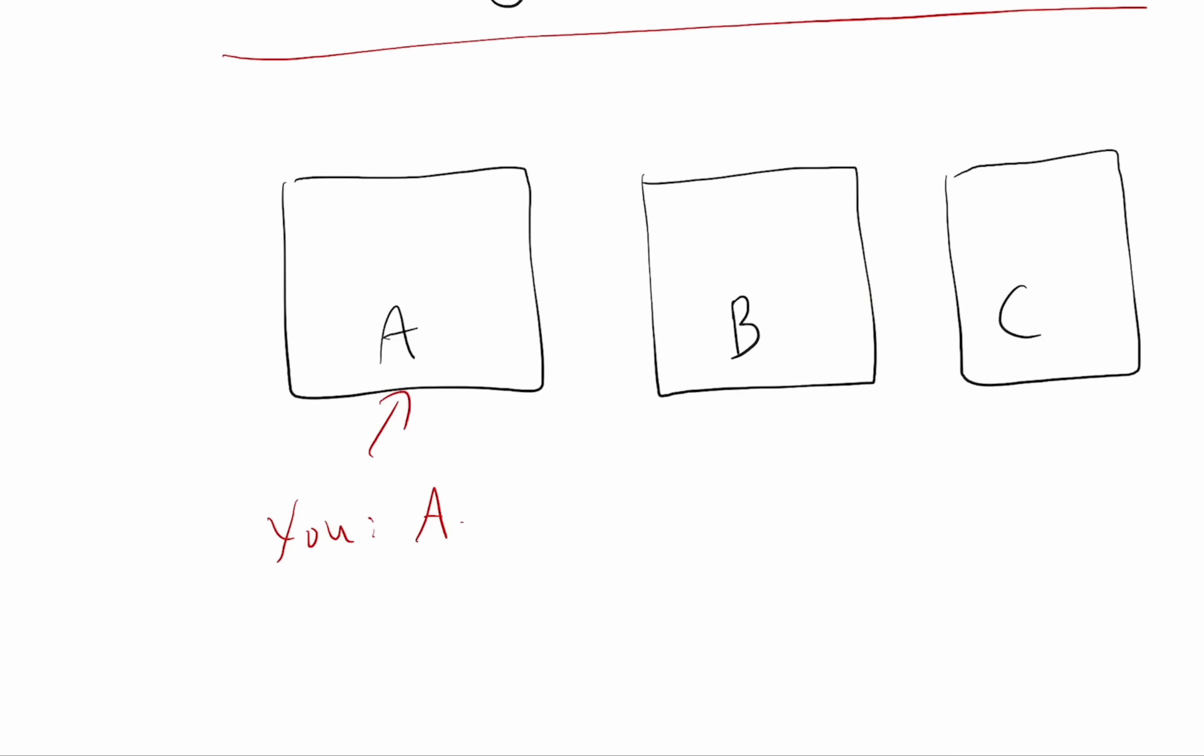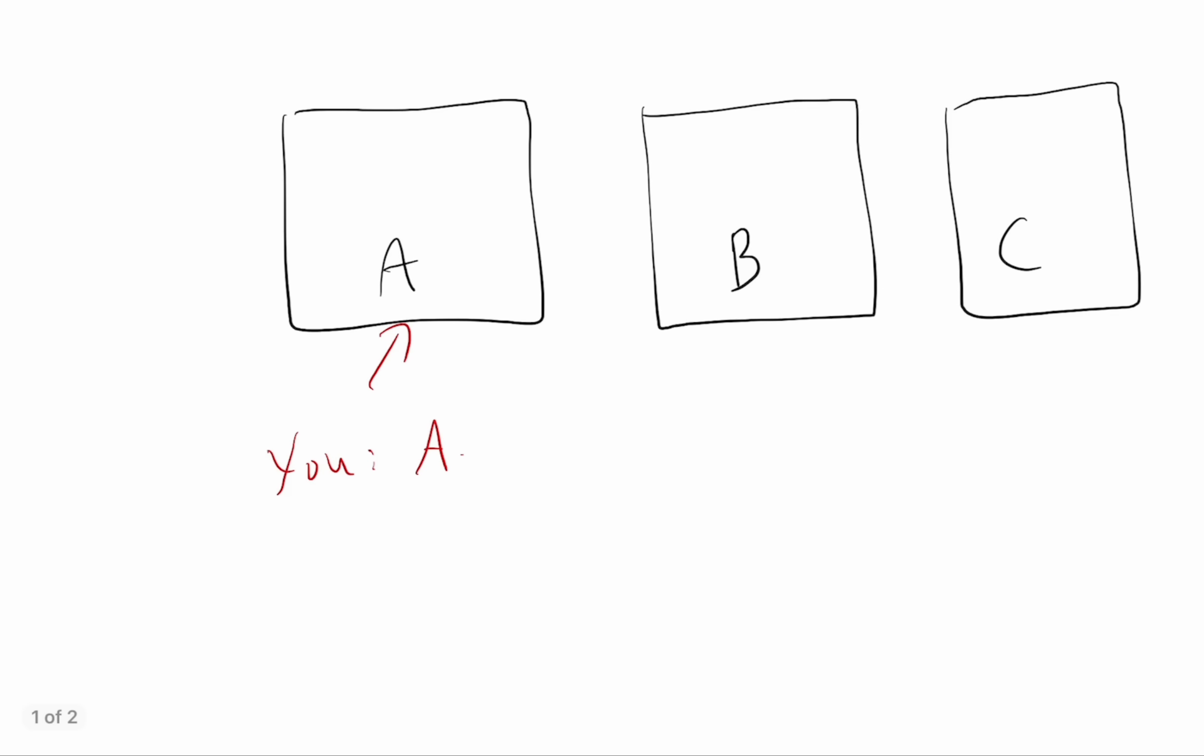And the answer is actually that if you switch over, you actually have a two-thirds chance, or a 66% chance of winning. And most explanations go something like this: if you initially picked A, then there's like a one-third chance that it's behind A, and a two-thirds chance that it's behind either door B or C.